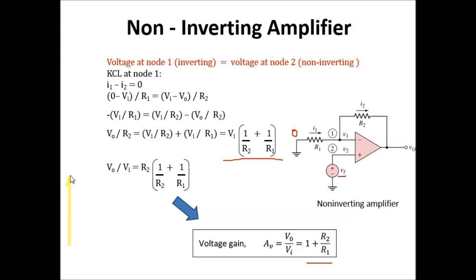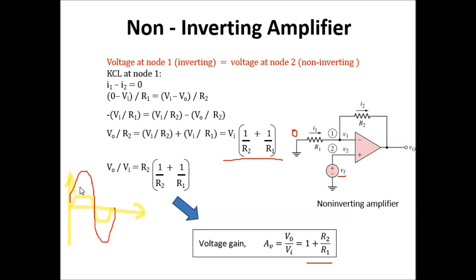For the non-inverting amplifier the gain is positive, which means if this is the input signal, the output signal will have the same phase and the same shape. However, the amplitude is amplified — the amplitude will be increased.